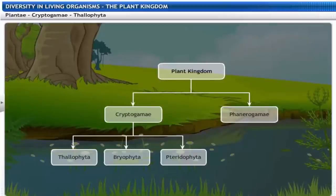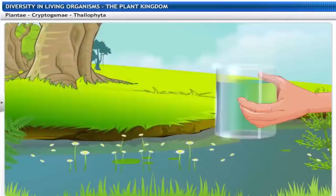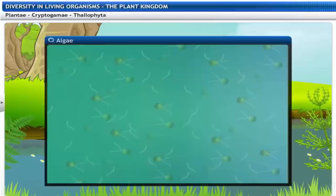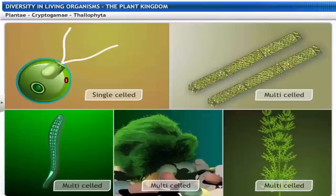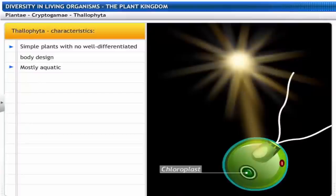Thallophyta are the simplest of plants that do not have a well-differentiated body design. They are mostly aquatic. Algae do not have leaves, stems or roots. Algae can be single as well as multi-celled organisms and are autotrophic in nutrition. Algae belong to the group Thallophyta.